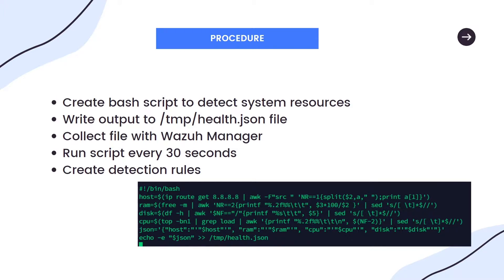We are going to write a bash script to detect system resources — CPU, memory, and disk space — and write that output to our temp health.json file. We'll collect that file with the Wazuh manager, run the script every 30 seconds, and create detection rules to detect when CPU is running at 80%, RAM is at 80 or 90%, or whatever threshold we set.